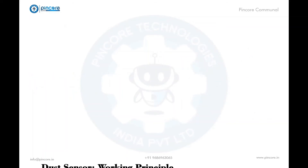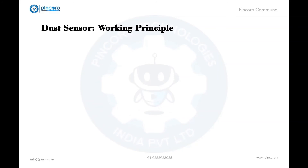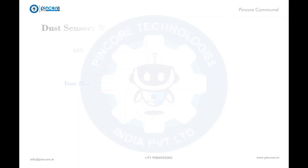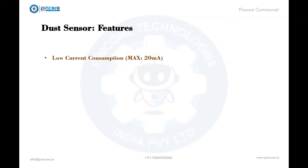The dust sensor consists of an IR LED and a phototransistor. When the sensor is turned on, there will be dust flow from the environment and the IR LED emits IR rays. The pulse pattern principle is applied here, so the phototransistor, which is dependent on light energy, converts it into electrical energy and produces current and voltage.